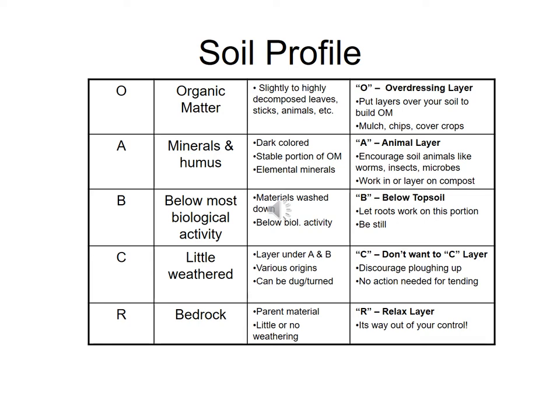Sometimes materials in the B horizon are things that have washed down from the O and A horizons. Roots do go into the B horizon, mostly to stabilize the plant, but sometimes to seek deeper water sources. The C horizon is underneath the B horizon — it's very little to somewhat weathered parent material approaching bedrock. Below that is the bedrock, the R layer.